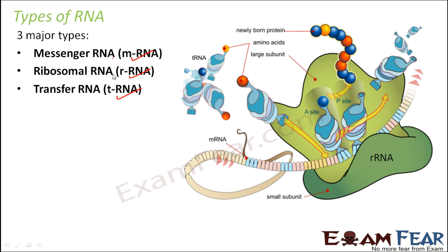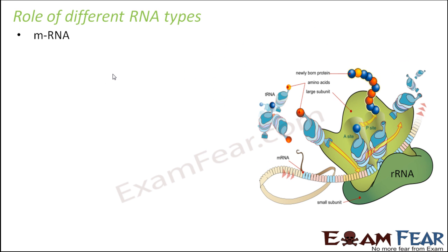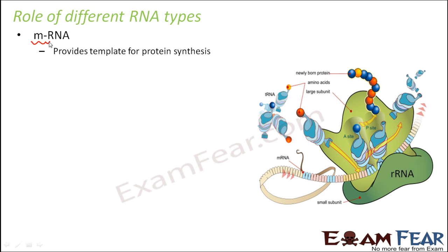Now let us look at the role of each of these RNAs. If you talk about mRNA, it provides the template for protein synthesis. The RNA which gets created during the process of transcription is the messenger RNA. The word messenger means something which carries information from one part to another. So this messenger RNA acts as the link between the DNA and the protein — it carries the genetic information stored in DNA and carries this message to direct protein synthesis. That is why it is called messenger RNA.